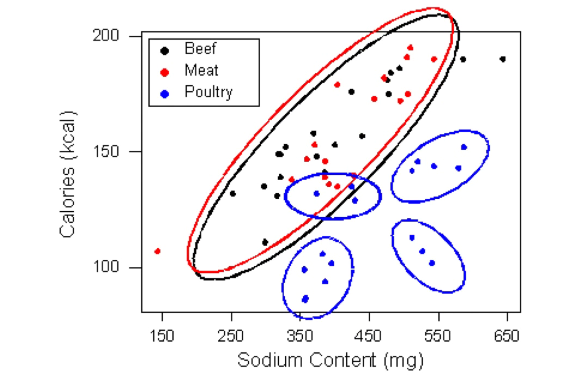Interestingly, it appears that the form of the relationship specifically for poultry is further clustered, and we can only speculate about whether there is another categorical variable that describes these apparent subcategories of poultry hot dogs.